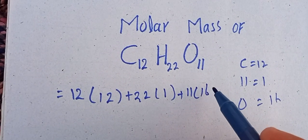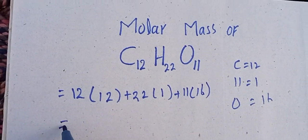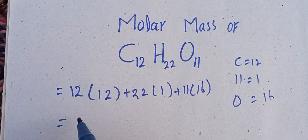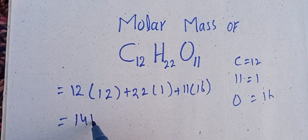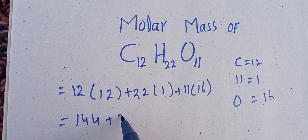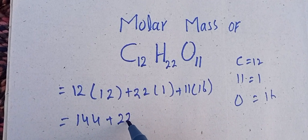Atomic mass of oxygen is 16. Dear students, 12 multiplied by 12 equals 144, plus 22 multiplied by 1 equals 22.